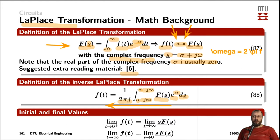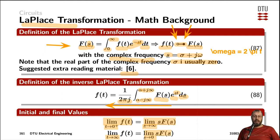The limit of a function in the time domain as time approaches zero from the right is equal to the limit of the same function in the frequency domain multiplied by the complex frequency, as the complex frequency approaches infinity. Conversely, as t approaches infinity — for example for DC signals which are constant all the way to infinity — you would take the limit of the function in the frequency domain multiplied by the complex frequency as the frequency approaches zero. That is the mathematical background for switching between time domain and frequency domain.